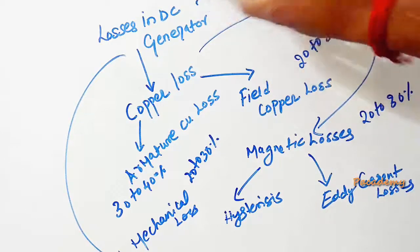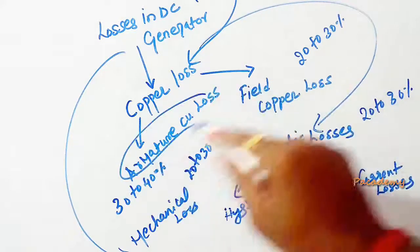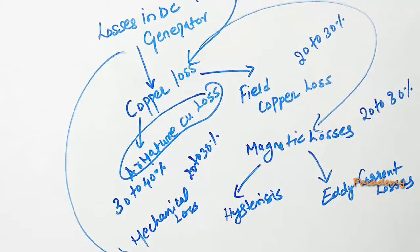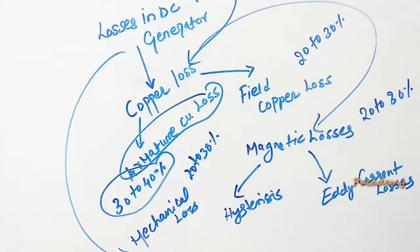One kind is copper loss. The copper loss is of two kinds. One is armature copper loss, the I2R loss happening in the armature windings of the generator. These losses account to around 30 to 40% of the total loss which happen in a generator while it's operating on full load conditions.